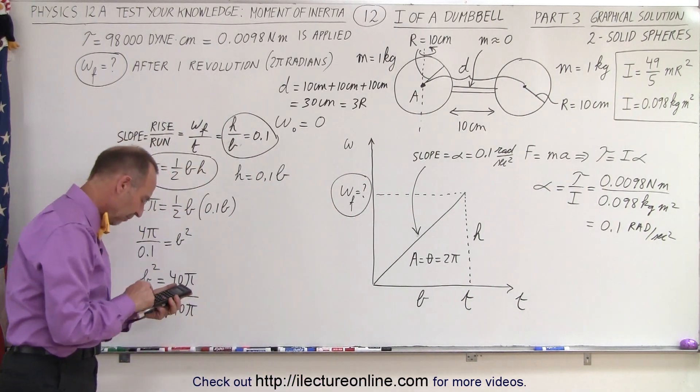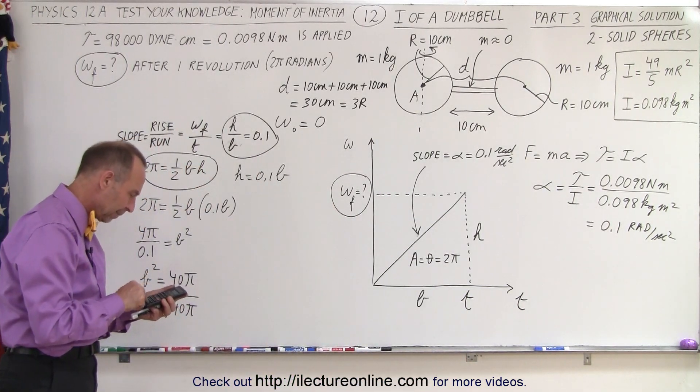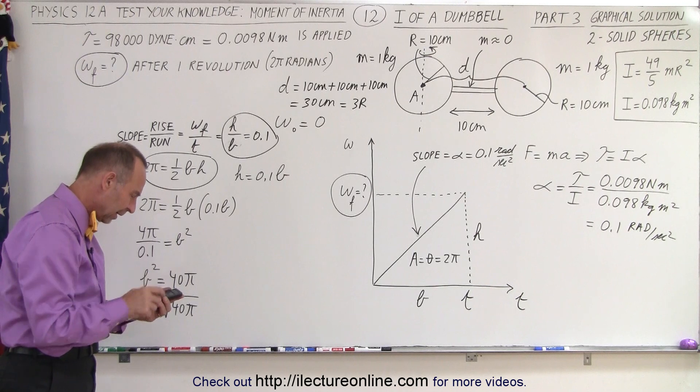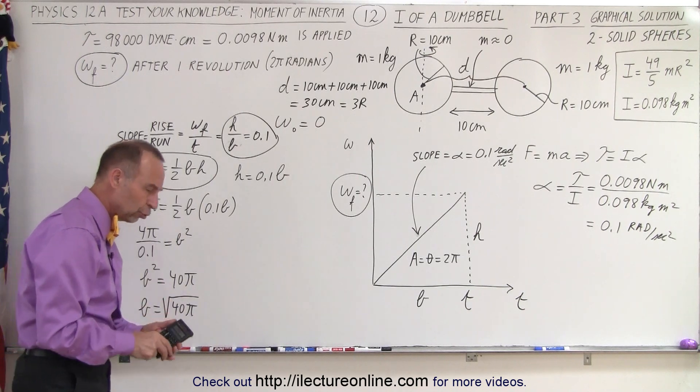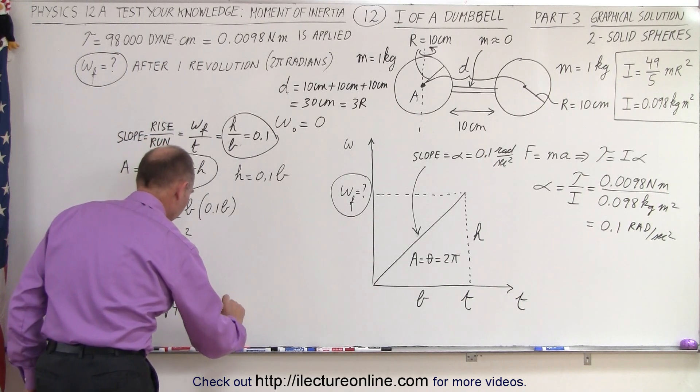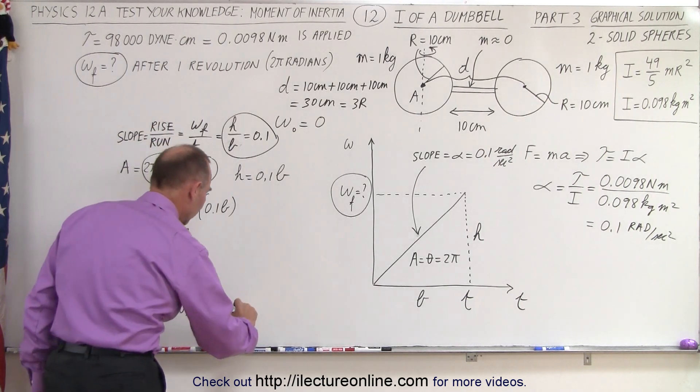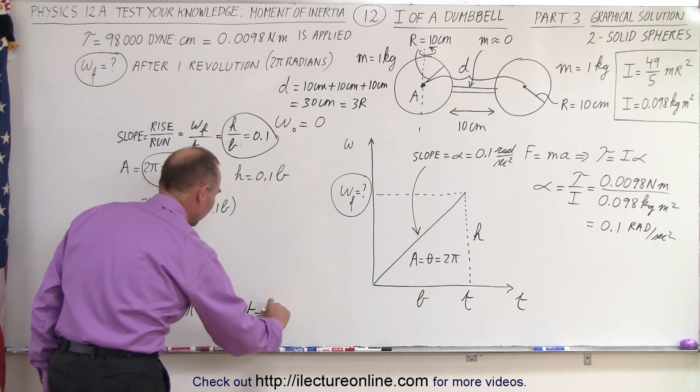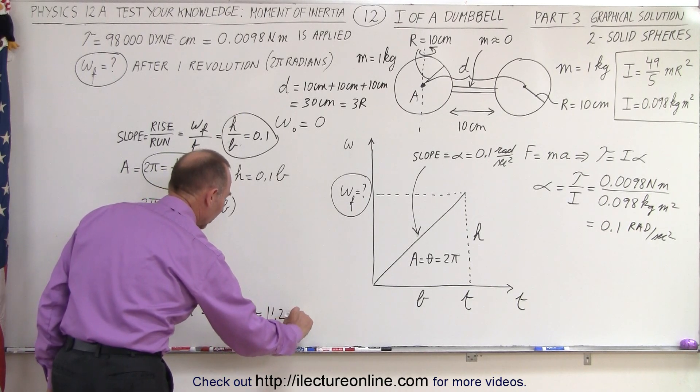So, let's do that. So, we have 40 times pi. Take the square root of that. That gives me 11.2. So, it gives me 11.2, and that is equal to the time. So, we can say it's 11.2 seconds, standard units.